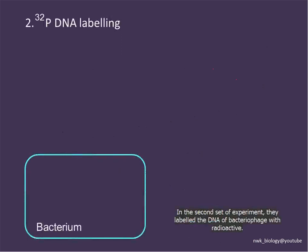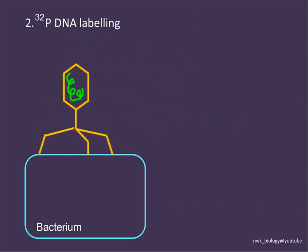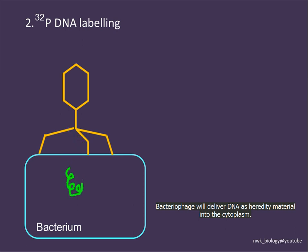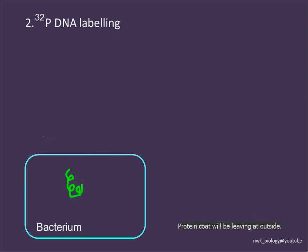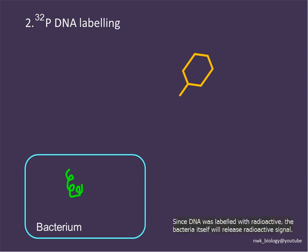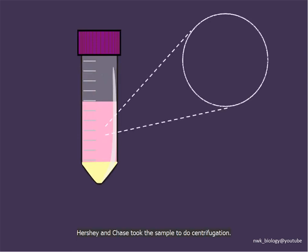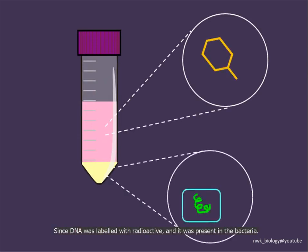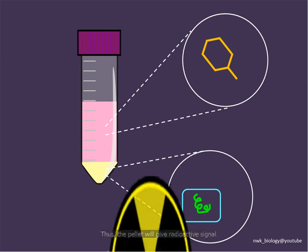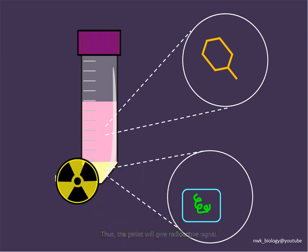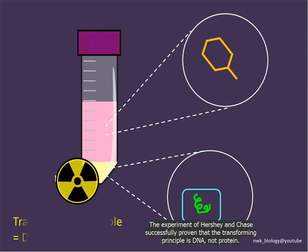In the second set of experiments, they labeled the DNA of the bacteriophage with radioactive signal and allowed the bacteriophage to infect the bacteria. The bacteriophage delivered the DNA hereditary material into the cytoplasm, while the protein coat was left outside. Since the DNA was labeled with radioactive signal, the bacteria themselves released a radioactive signal. After centrifugation, the pellet gave a radioactive signal, successfully proving that the transforming principle is DNA, not protein.